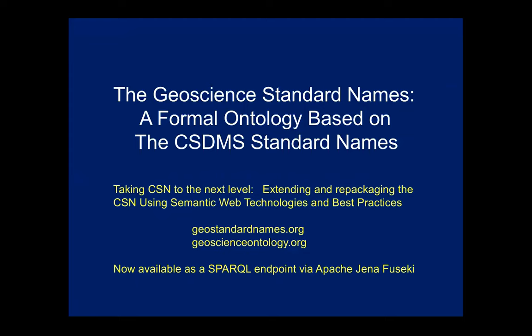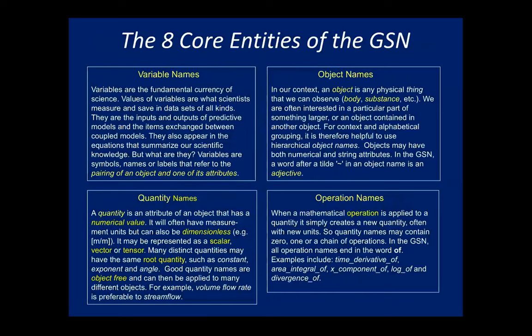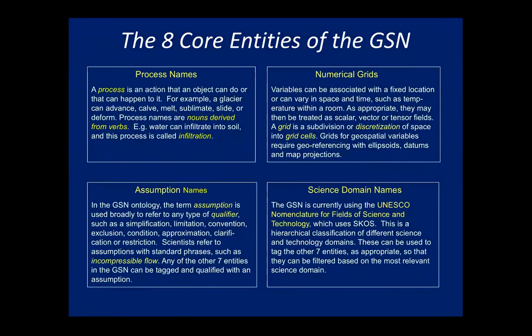What we found in the upper ontology work is that there are really about eight core entities to think about for this ontology. Variable names are composed of object and quantity names and can have operation names. Process names come up often in quantity names — infiltration rate quantifies the rate at which infiltration occurs; vibration frequency quantifies the process of vibration. We've got a rule to identify them: any physical process name is a noun derived from a verb. For example, the verb 'infiltrate' becomes the noun 'infiltration'; 'subside' becomes 'subsidence.'